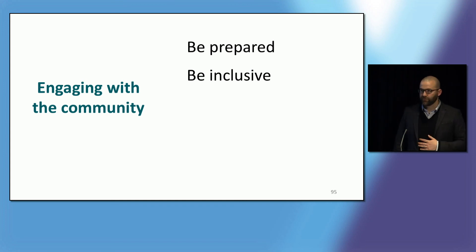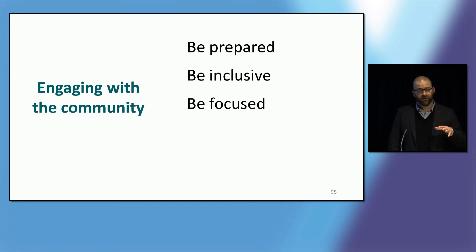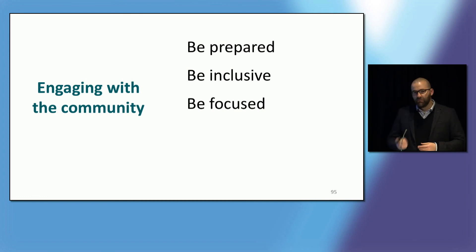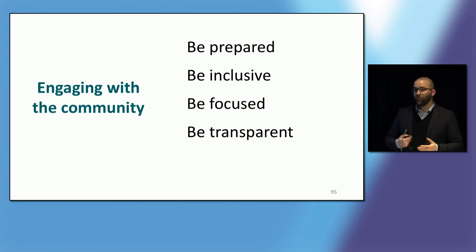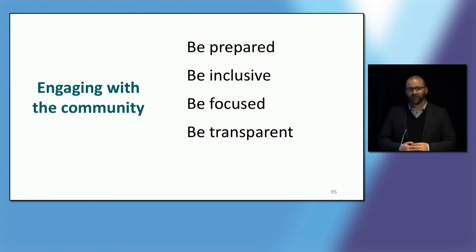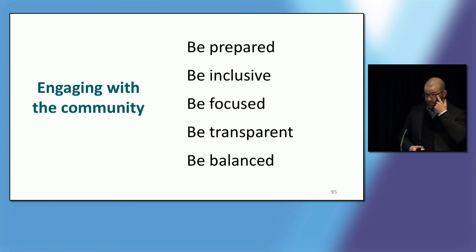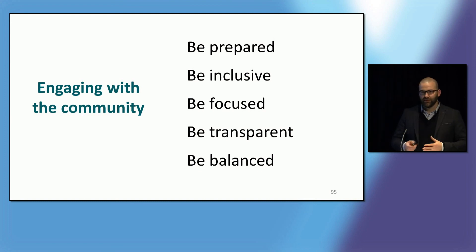Being focused — one of the real limitations around the work done around Haig Park to date is the lack of focus around what the community engagement was all about, what information was being sought from the community in terms of what should be done, and that meant there were some really vague ideas and concerns raised around safety that need to be explored and unpacked further. Being transparent is really important — not taking information from the community and not giving anything back about what you're doing with it. And being balanced — you want to talk to people about their concerns about safety, but you don't want to make them feel less safe. It's about being balanced in how you present information and how you manage that whole dysfunctional versus functional fear.